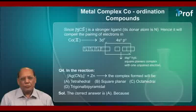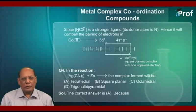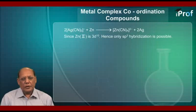Question number four. In the reaction given: 2[Ag(CN)2]⁻ + Zn → [Zn(CN)4]²⁻ + 2Ag. The complex formed will be: A) tetrahedral, B) square planar, C) octahedral, D) trigonal bipyramidal. The correct answer is A, because Zn(II) is 3d10, hence only SP3 hybridization is possible, giving a tetrahedral complex.